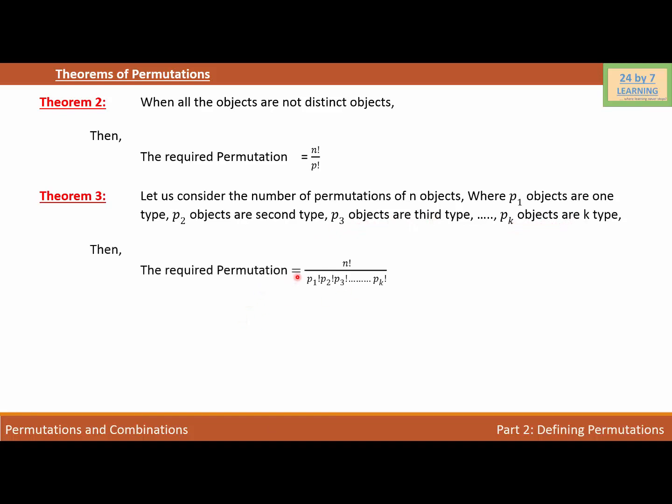Then the required permutation is equal to factorial n over factorial p1 times factorial p2 times factorial p3 dash dash dash all the way to factorial pk.